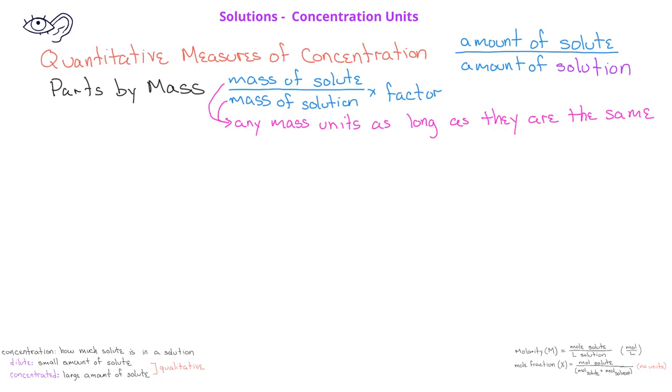The first parts by mass concentration is known as mass percent. We sometimes represent mass percent by m/m percent. You find mass percent by taking the mass of the solute divided by the mass of the solution, multiplying by 100.